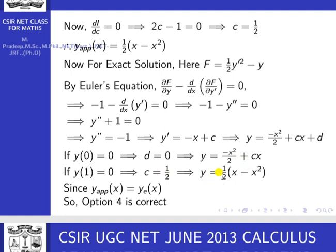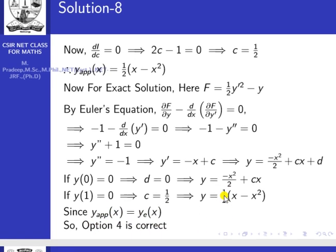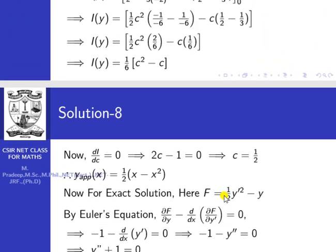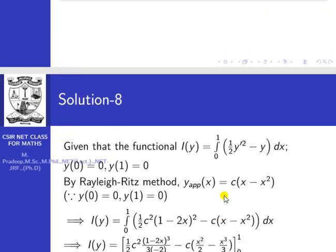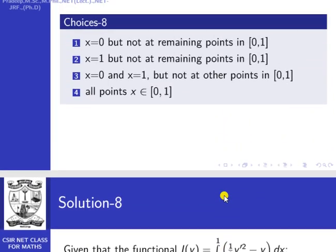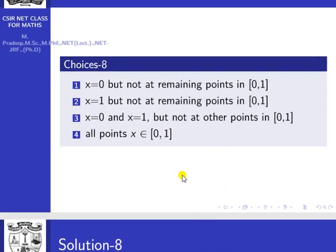Both the approximate solution and exact solution are equal: y-approximate = y-exact = (1/2)(x − x²). So option 4 is correct — for all points x belonging to [0,1], the approximate solution and exact solution both are equal. Thank you.